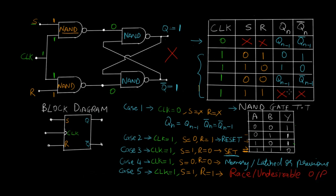This race condition can be avoided using the clock. If S and R are both one but the clock is zero, the entire circuit is disabled. Since clock is zero, the output of the clock NAND gates is always one and one, and the final output will always be the previous state Qn-1, irrespective of S and R. So the race condition can be avoided using clock, which provides proper synchronization and more control over the output.